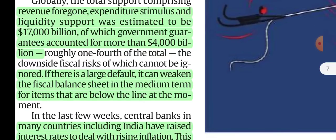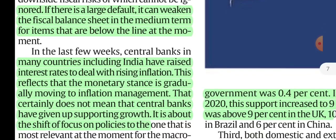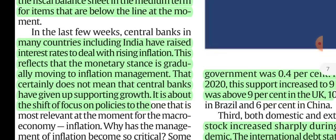There are also a lot of loans that the government has guaranteed. If those are defaulted, the fiscal balance sheet will weaken. The government has guaranteed a large number of loans, and if defaulted, NPAs will rise and the government's fiscal balance sheet will weaken.